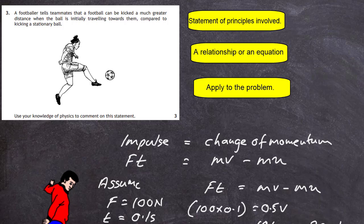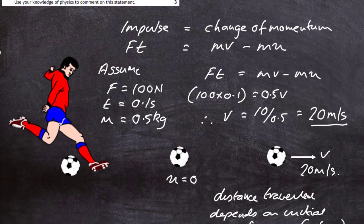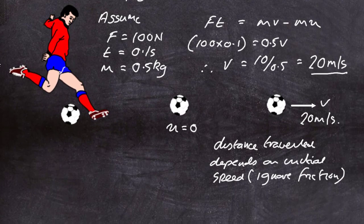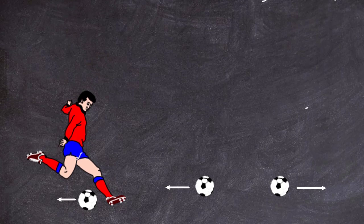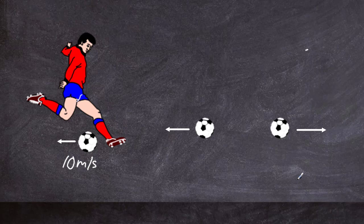Now let's move on to the crux of the problem. The footballer claims the ball travels much further when it's initially moving towards them. We've got the stationary case: 20 m/s. Now let's assume the ball is moving towards the footballer. What speed? Let's take about half the kick speed — 10 m/s towards the footballer. I got that by halving the 20 m/s result — just making a reasonable guess.